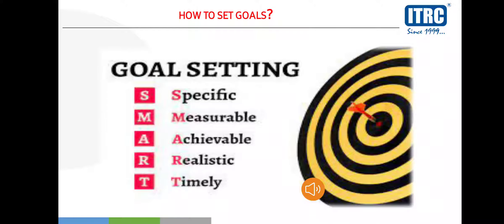A stands for Achievable — your goal should be achievable within your range. If it is impossible, you cannot achieve it, but if it is within your capability, then you will achieve your goal. R stands for Realistic — you should be dedicated and realistic about your goal.